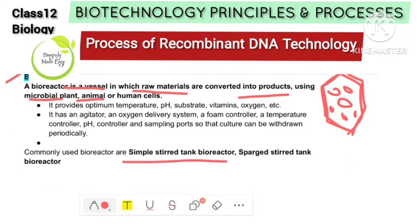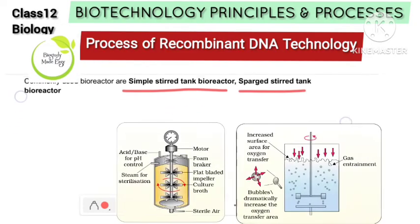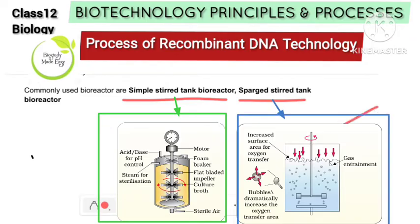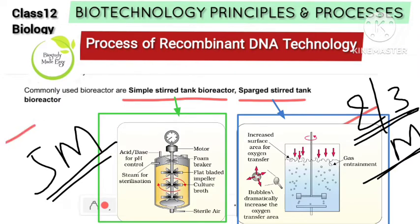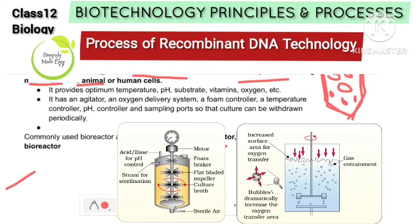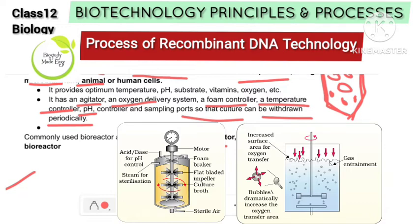The commonly used bioreactor is a sparged stirred tank bioreactor. You can see this diagram in 3 or 5 mark questions. The bioreactor has an agitator, oxygen delivery system, foam controller, temperature controller, and pH controller. Culture medium is added in, and periodically the product is drawn out.